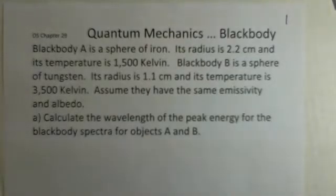Quantum mechanics sample problems. This relates to chapter 29 of the OpenStax College Physics textbook. This example deals with blackbodies. Now we have two blackbodies. Blackbody A is made of pure iron, has a radius of 2.2 centimeters.